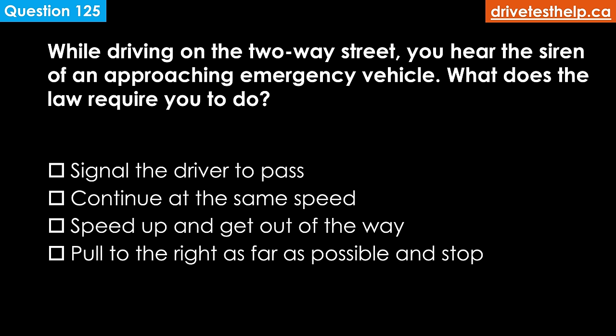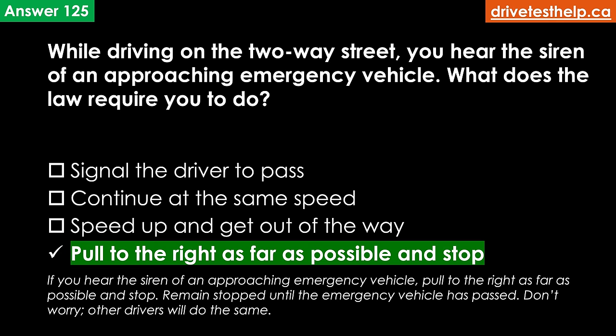When driving on a two-way street, you hear the siren of an approaching emergency vehicle. What does the law require you to do? Options: signal the driver to pass; continue at the same speed; speed up and get out of the way; pull to the right as far as possible and stop. The correct answer is pull to the right as far as possible and stop. Remain stopped until the emergency vehicle has passed.